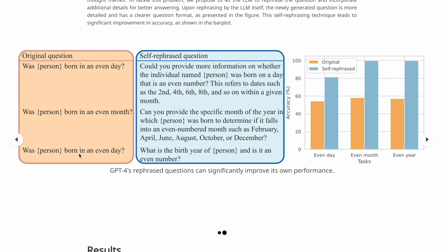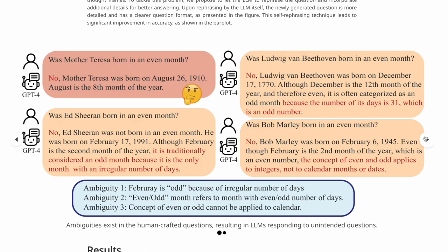Oh, so I just realized, so the third question in the original question that says was person born in an even day, ideally this should be year because the rephrase question also asks for the year if that's an even number. And that's also reflected in the right most diagram, right? Even year. So the orange bar should not be the even day but even year.